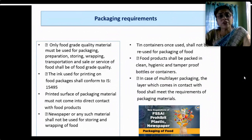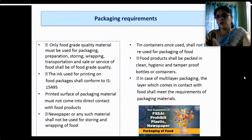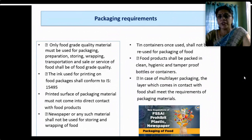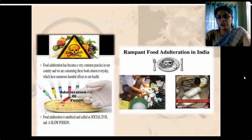As a consumer, you should be aware of packaging requirements. Only food-grade quality material should be used for packaging, storing, wrapping, transportation or sale of food. Even the ink used for printing on food packaging should conform to IS 15495. The printed surface of packaging material should not come in direct contact with the food product. Newspaper or any such material should not be used for storing or wrapping food. Tin containers should not be reused; bottles and containers should be clean, hygienic and tamper-proof.